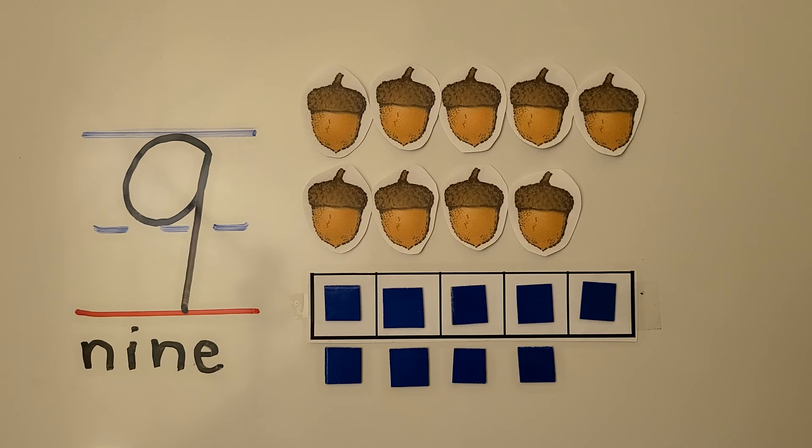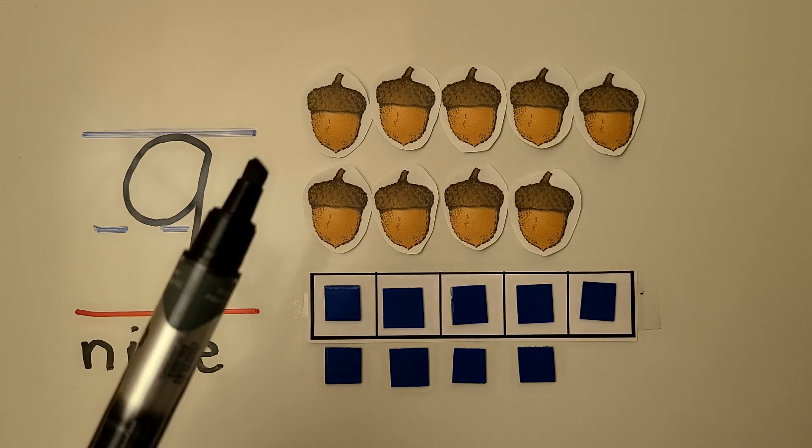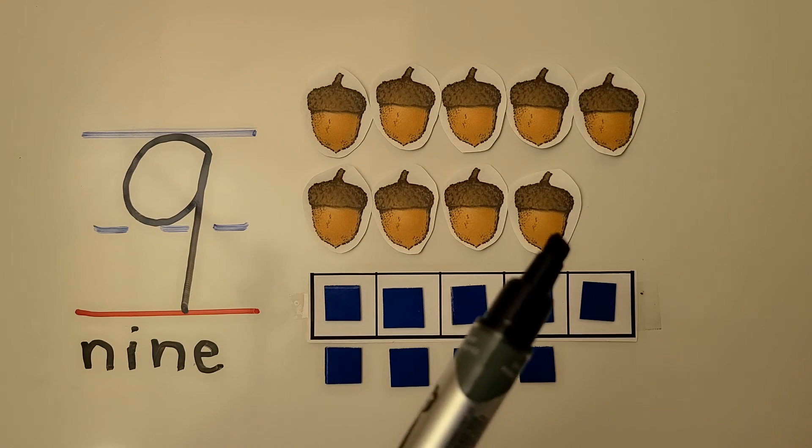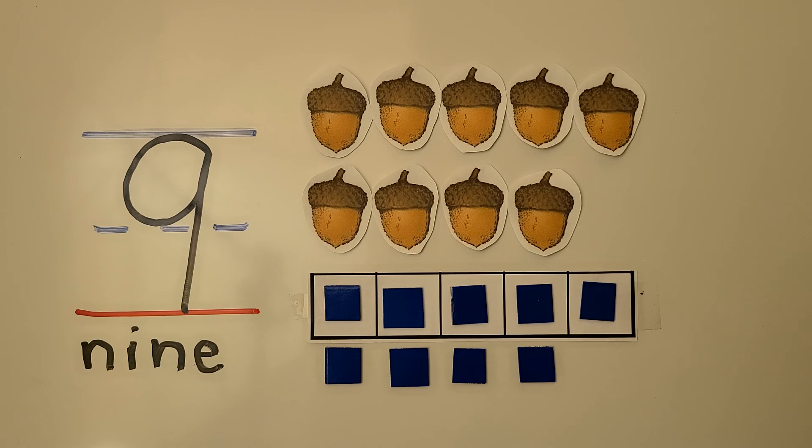We can use a 5 frame to show 9 as 5 and 4 more. When the 5 frame is full, we know we have 5 and we can count on from 5: 5, 6, 7, 8, 9. We have some acorns: 5, 6, 7, 8, 9 acorns.